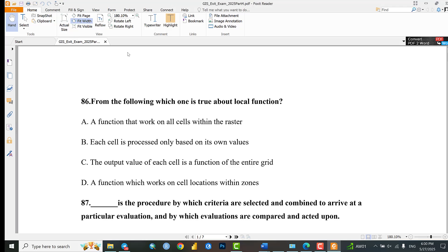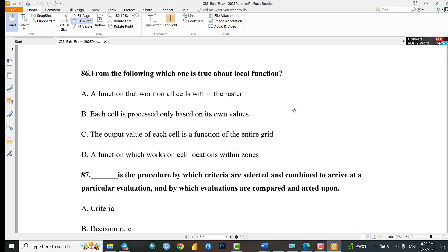Welcome back. Question number 83: From the following, which one is true about local function? A: A function that works on all cells within the raster. B: Each cell is processed only based on its own values.